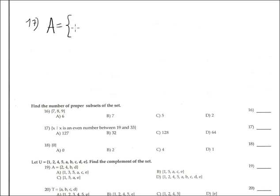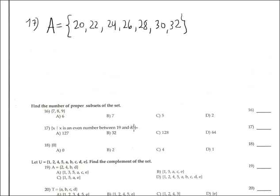Problem 17 asks for the set formed by even numbers between 19 and 33. The set A is: 20, 22, 24, 26, 28, 30, and 32. That's it, because the next even number, 34, is not between 19 and 33. We have a total of 7 elements, so the cardinality of this set is 7.